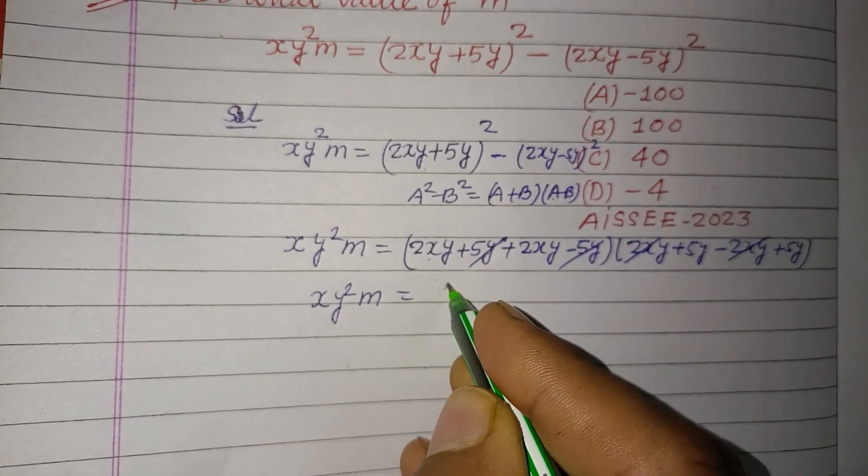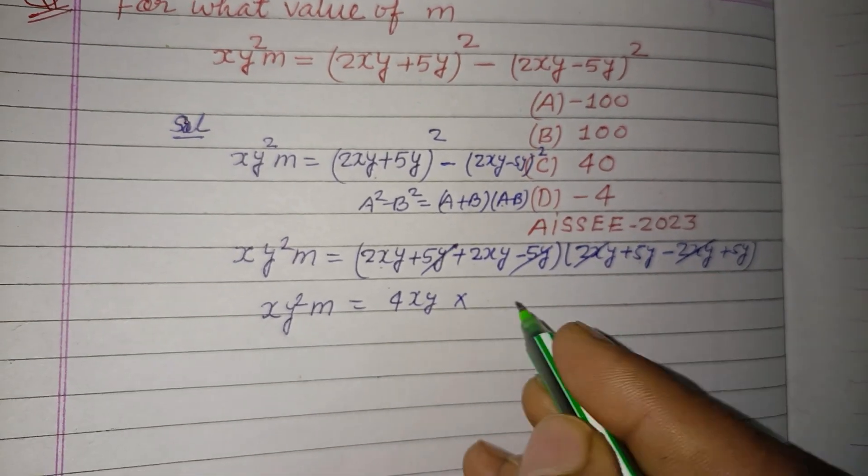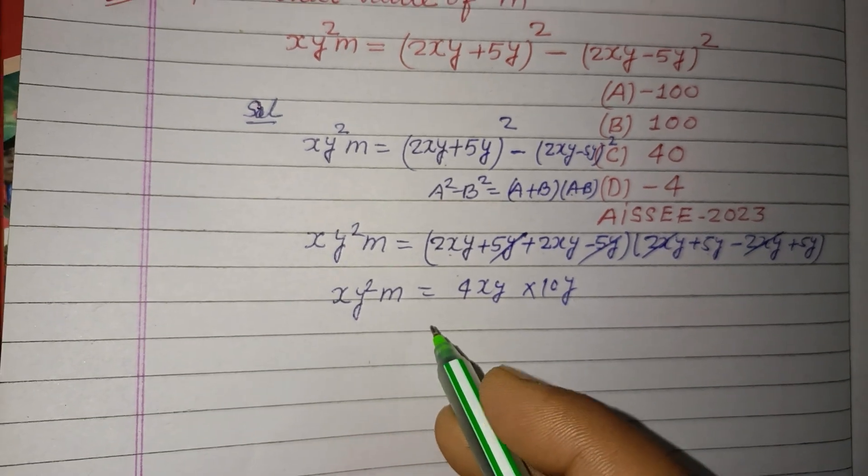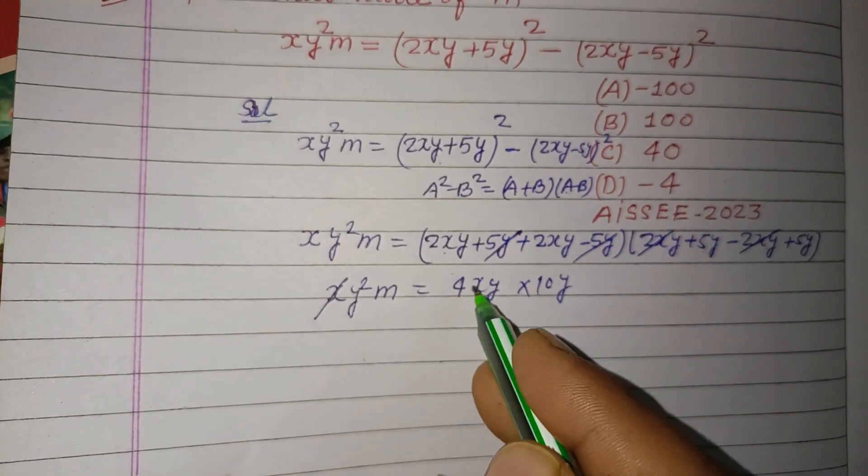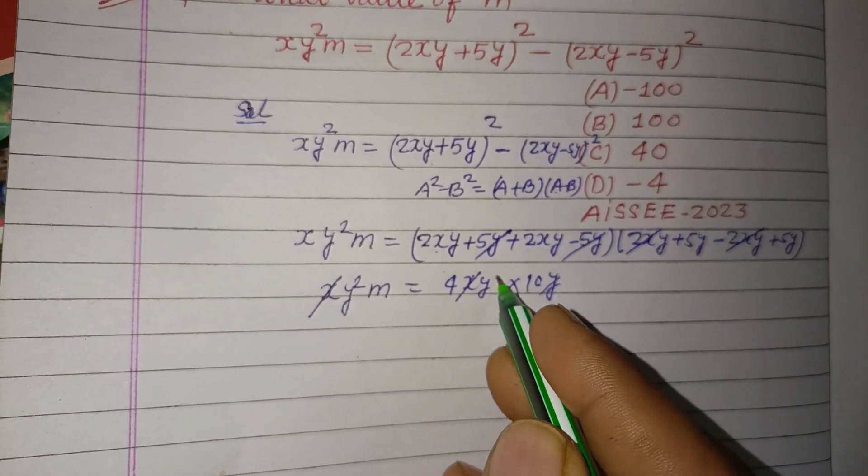x y square m equals 2xy, 2xy is 4xy into 5y, 5y, this is 10y.